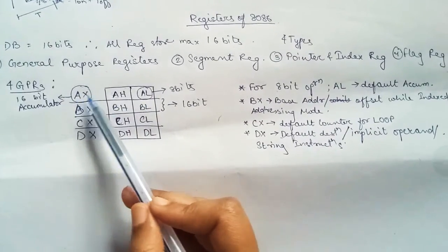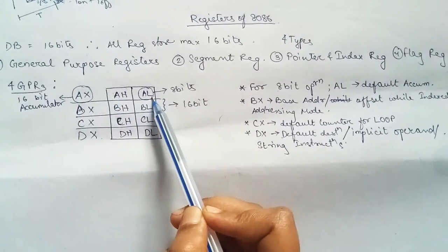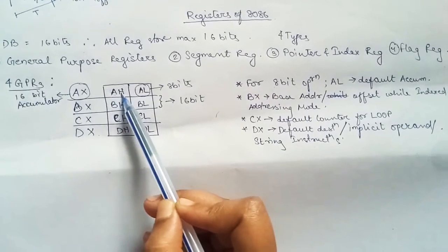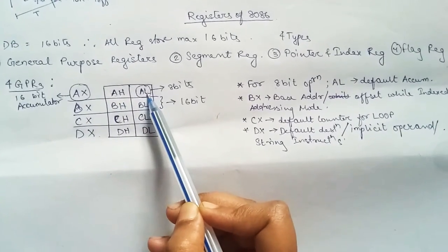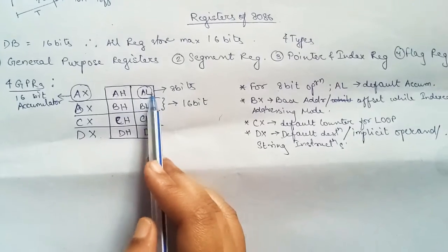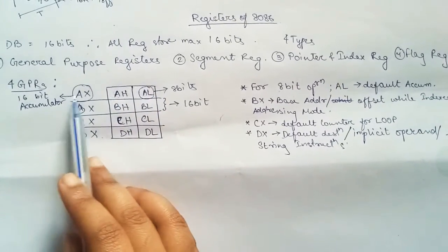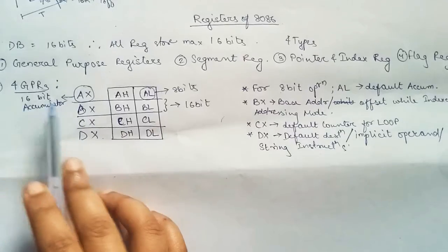Like AX is divided into AH and AL, where each is 8 bit. So as a whole, this can be regarded as a 16-bit accumulator. AX means accumulator 16-bit.